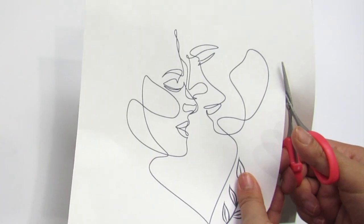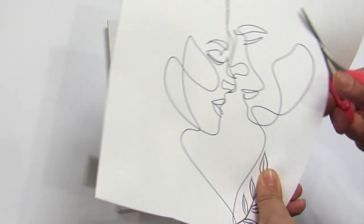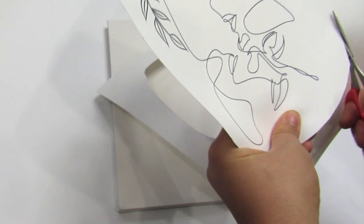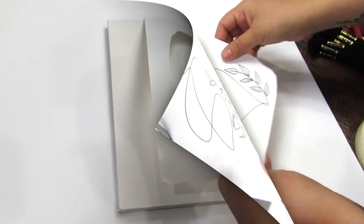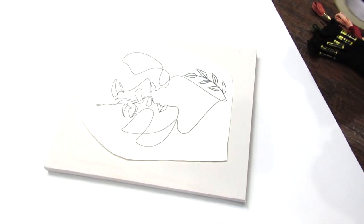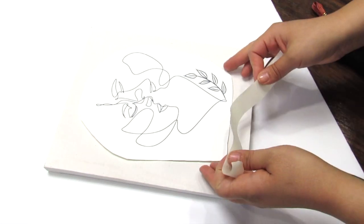To start, I just cut around the image. That way I was able to see where I should place it on our canvas. And I did print this on some cardstock just so it was a little bit more durable. Once I have the printable cut, I'm going to take some tape and tape that in place.